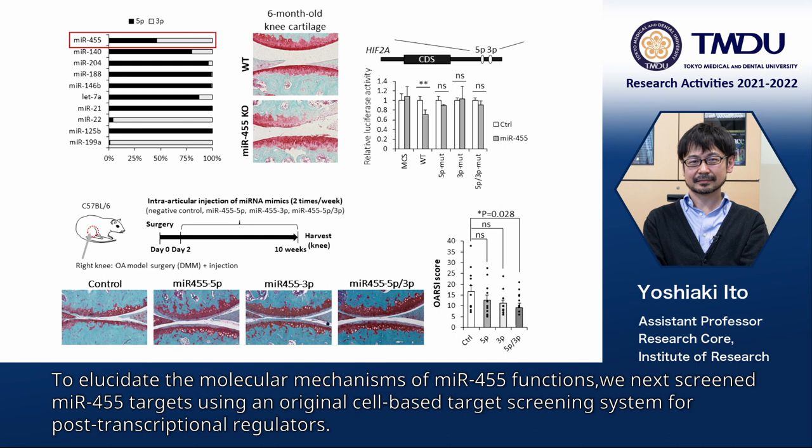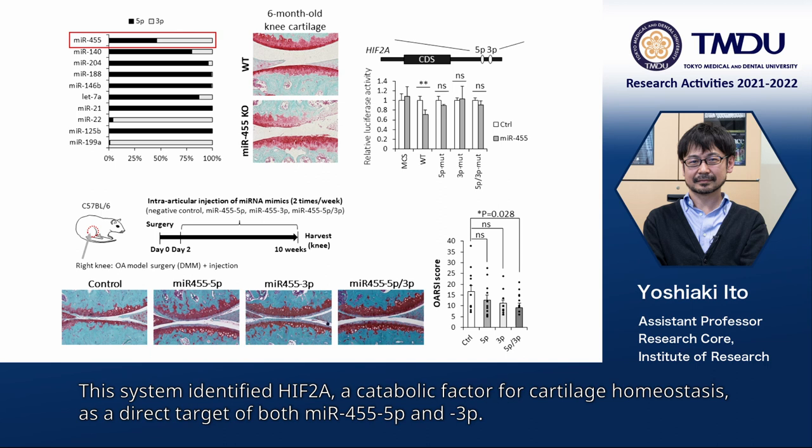To elucidate the molecular mechanisms of MIR-455 functions, we next screened MIR-455 targets using an original cell-based target screening system for post-transcriptional regulators. This system identified HIF-2α, a catabolic factor for cartilage homeostasis, as a direct target of both MIR-455 5P and 3P.